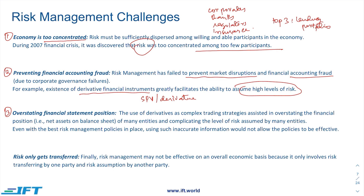The third risk management challenge is the overstatement of financial statements. The use of derivatives is extremely complex, with a number of products and strategies that can be used to manage risk, but organizations actually overstate their financial position. The net assets on their balance sheet do not reflect their actual risk. If we are overestimating or underestimating our risk, no matter how sophisticated our risk management processes are, inaccurate information will not allow policies to be effective.